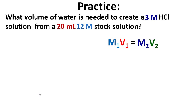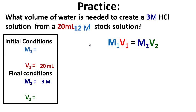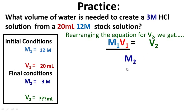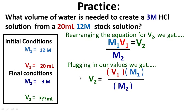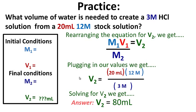Let's see how you did. We want to create a three molar HCl solution — that's our final condition, M2. We're starting with 20 milliliters of a 12 molar stock solution, so V1 = 20 mL and M1 = 12 molar. Solving for V2: V2 = (V1 × M1) / M2 = (20 mL × 12 molar) / 3 molar = 80 milliliters. Hopefully you got that right.